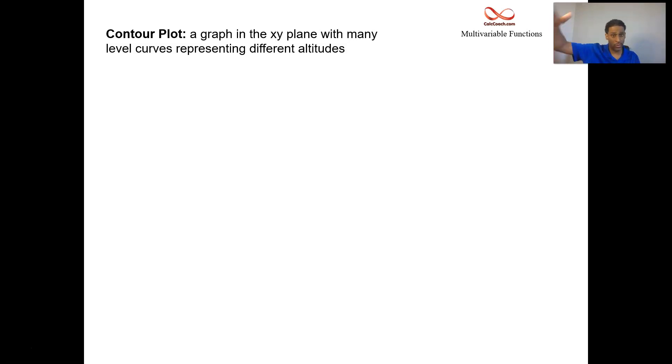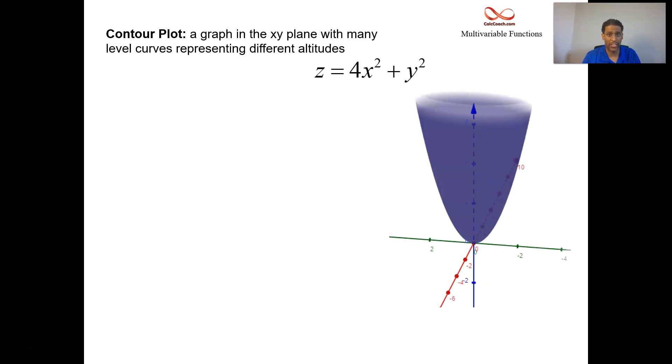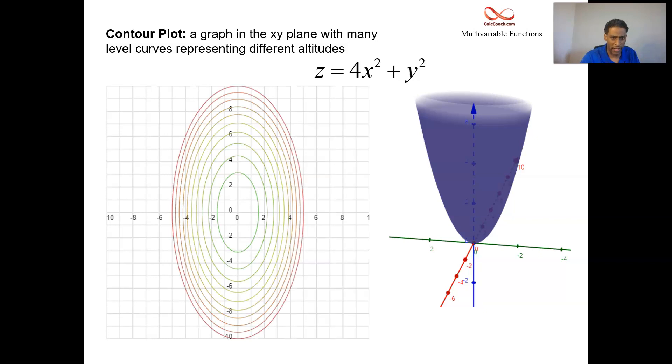If you have a plot that has a bunch of different level curves in the xy plane representing different altitudes for that blue plane that was moving up and down, that's called a contour plot. Here's the function z equals 4x squared plus y squared. It's a paraboloid, a bowl shape. If you slice at different altitudes, you'll get an ellipse. If you let z be equal to a constant, what you'll be seeing is an ellipse. This graph on the left then is the different altitudes.